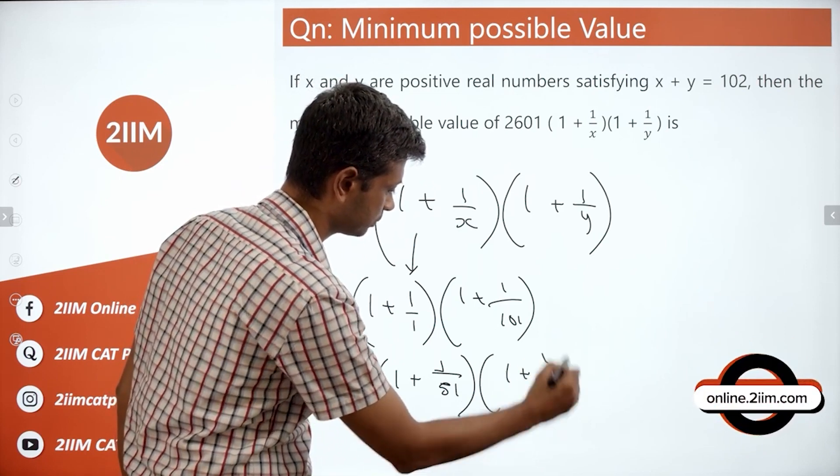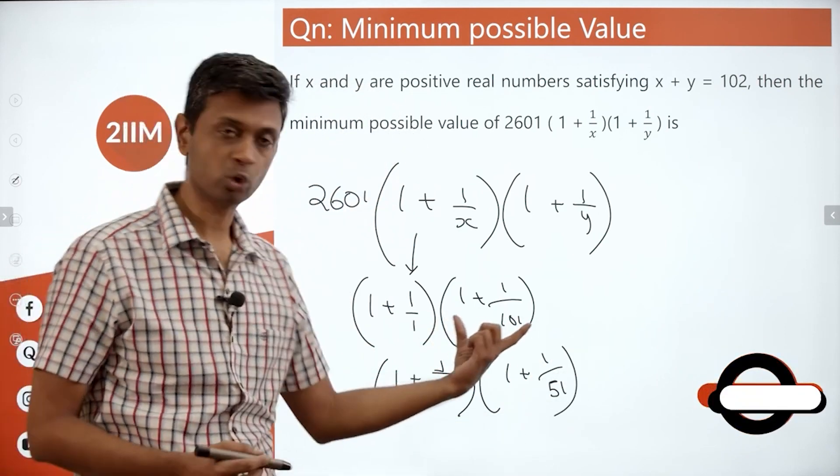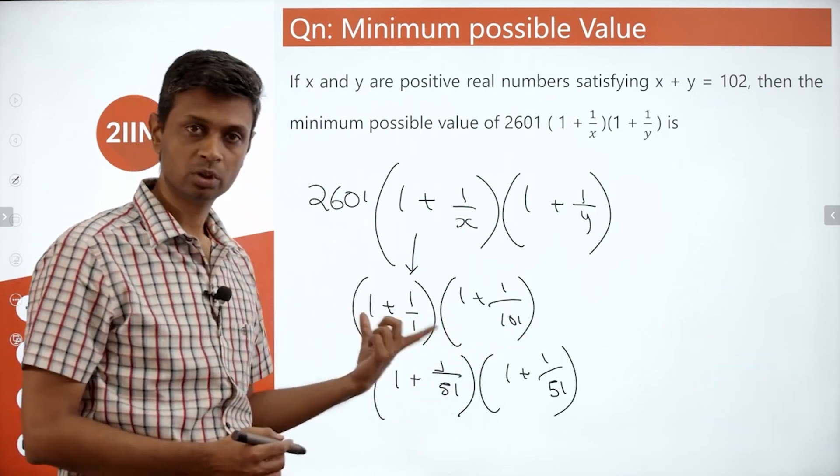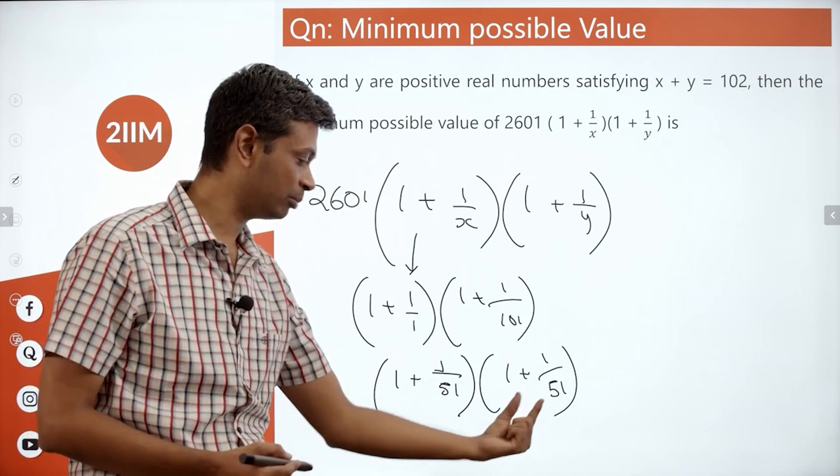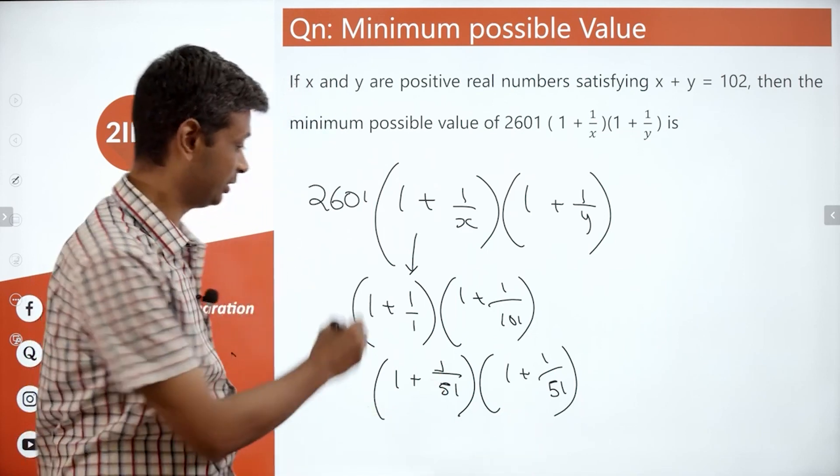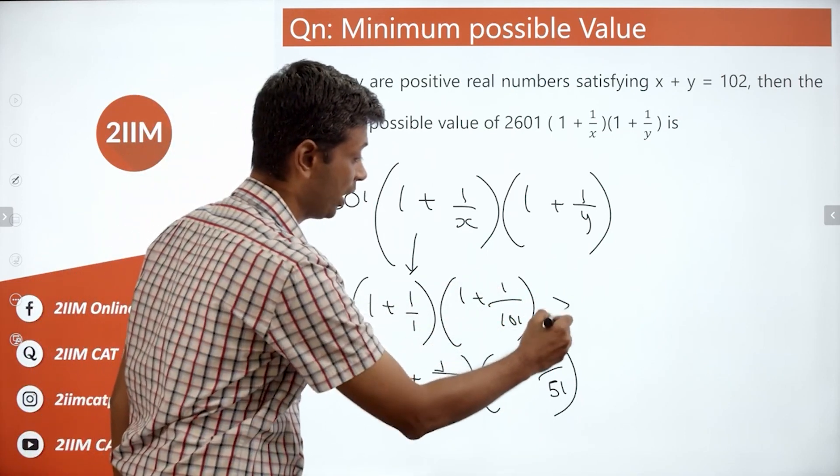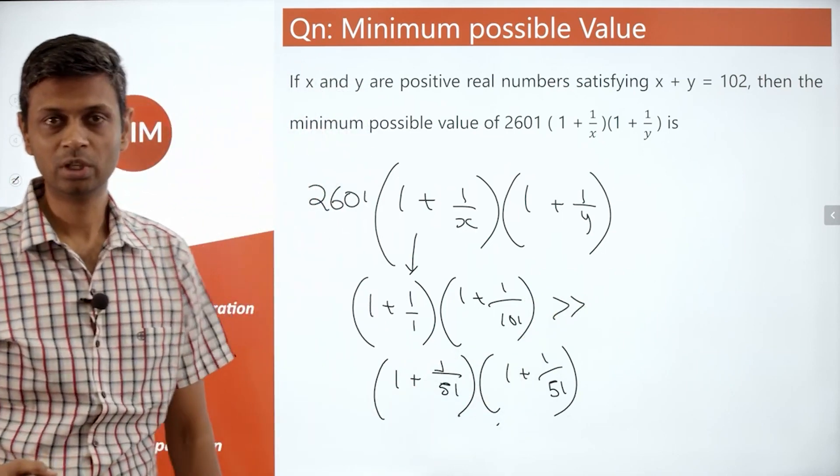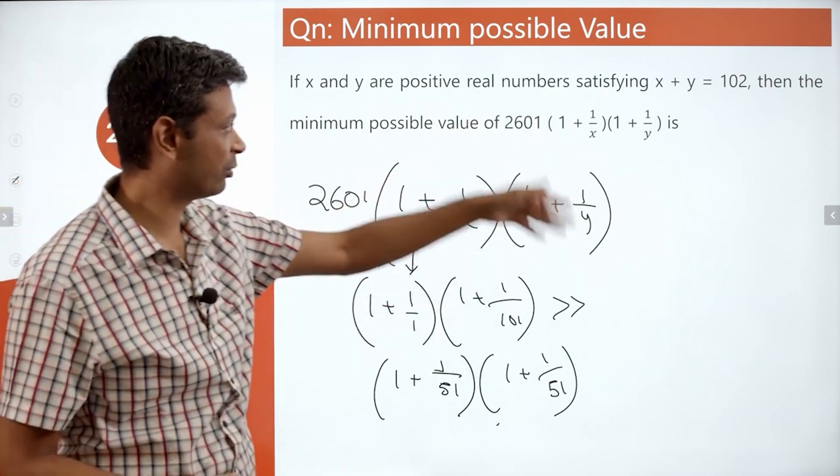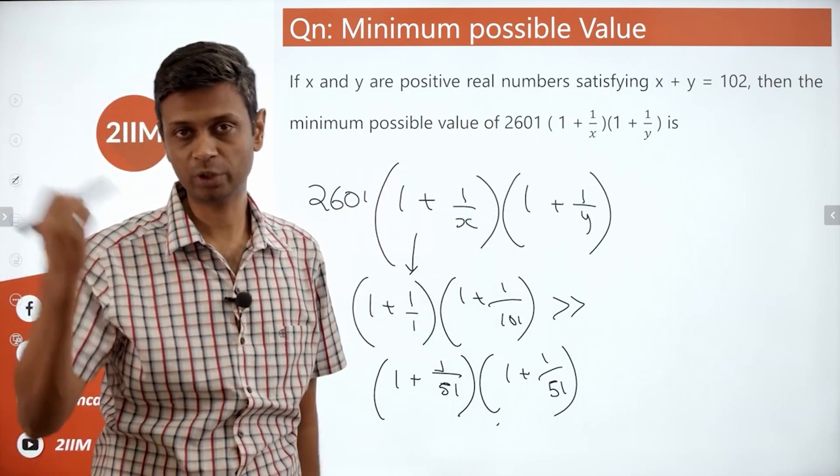This is barely more than 1, but this is 2. It's 2 into 1 point something. Both of these are barely more than 1, and so this is going to be way greater than that. We want to find the minimum possible value. The way to go about it: put x is 51, y is 51, both equal.